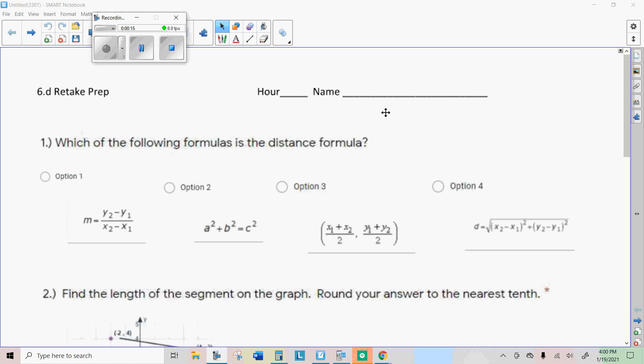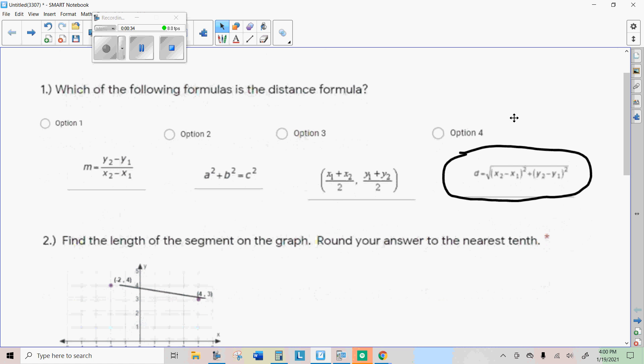This objective is all about finding the distance formula, which is a formula you can use to find the distance between two points on a coordinate grid. Let's start with this. Let's make sure we know which one is the distance formula, and it would be option 4 here. Now, I'm just going to explain this real quick to you so that you can use it.